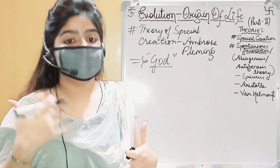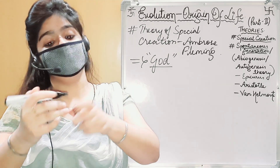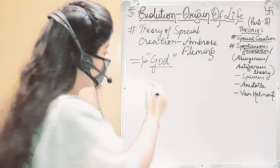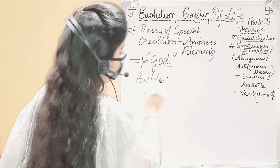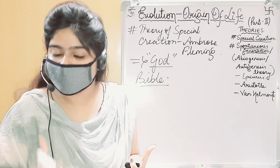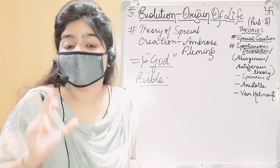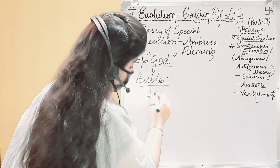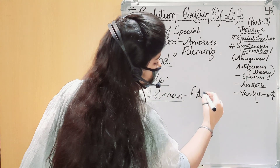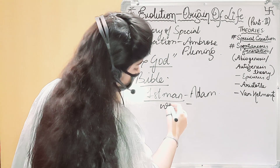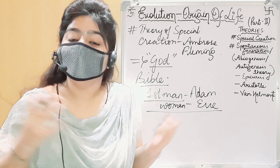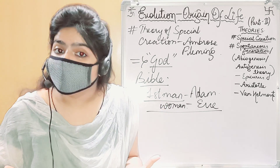There were so many events that can't be explained except by supernatural powers. Christians believed, as written in the Bible, that the earth was created in six natural days of the week, and on the seventh day the first man was created. The first man's name was Adam and the woman was Eve. Hindus believed that the earth was created by the god Brahma.